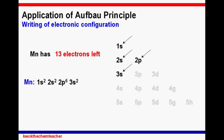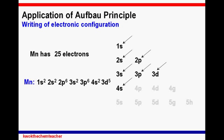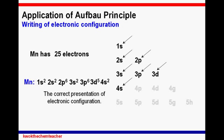After filling the 3S subshell, manganese has 13 electrons left unfilled. After filling the 3P subshell, manganese has 7 electrons left unfilled. Using the Aufbau Principle, we fill the 4S subshell next, leaving manganese with 5 electrons left unfilled. These remaining 5 electrons will be filled in the 3D subshell. Now, in writing the correct electronic configuration of manganese, you would have to write 3D5 before 4S2, despite us filling the 4S subshell before the 3D subshell.